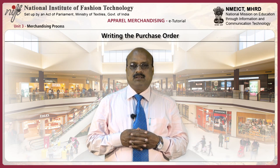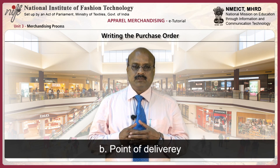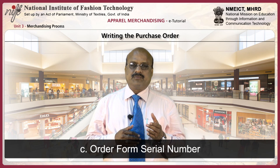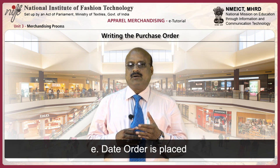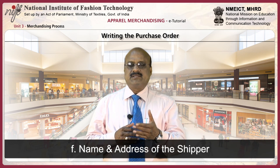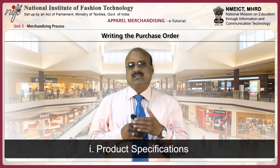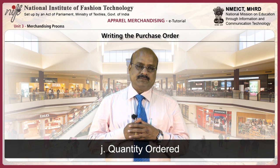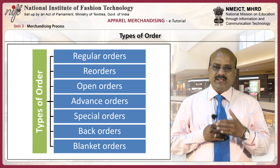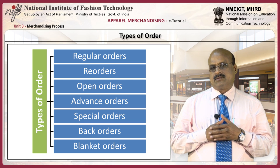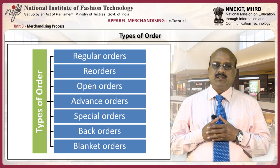When writing the purchase order, this information should be included in the order form: store name and address, point of delivery, order form serial number, store department number, date order is placed, name and address of the shipper, payment terms, FOB point, product specifications, and quantity ordered. There are different types of orders: regular orders, re-orders, open orders, advance orders, special orders, back orders and blanket orders.